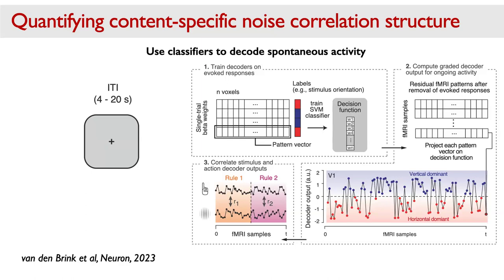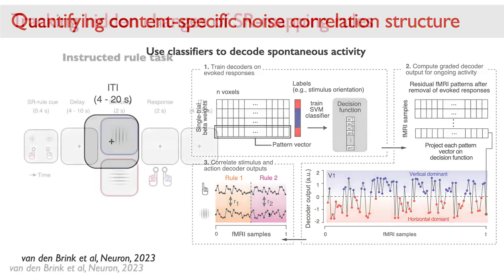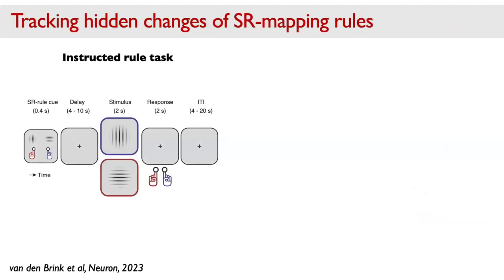For action classifiers in premotor cortex, we get a time series telling us whether the code tends more towards left or right hand button press. We correlate these continuous classifier outputs separately for time segments when one or the other rule was active. If our framework holds, we should see a correlation in both cases but with opposite signs — a sign flip — and that's our proxy for the switch in feature-specific noise correlation structure.